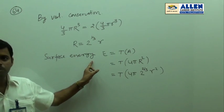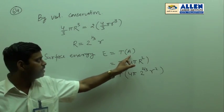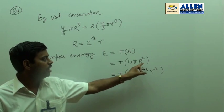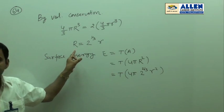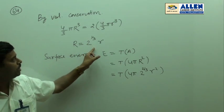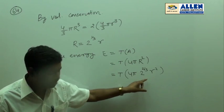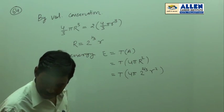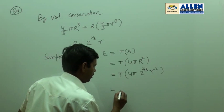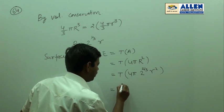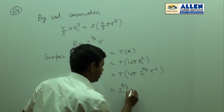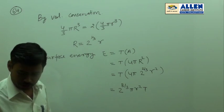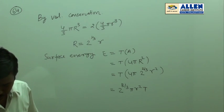The surface energy of the bigger drop equals surface tension into surface area of the bigger drop, so T into 4 pi R square. Substituting capital R equals 2 to the power 1 by 3 into r, you get the surface energy equals 2 to the power 1 by 3 into 4 pi r square T. The correct option is option number 4.